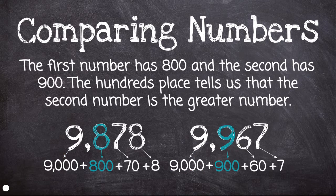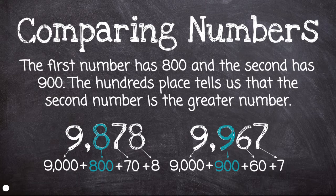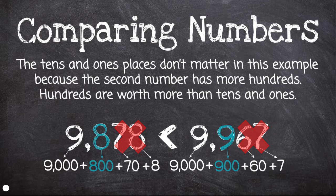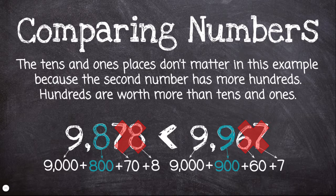The first number has 800 and the second has 900. The hundreds place tells us that the second number is the greater number. The tens and ones places don't matter in this example because the second number has more hundreds. Hundreds are worth more than tens and ones, so we don't even need to look at those places to compare these two numbers.